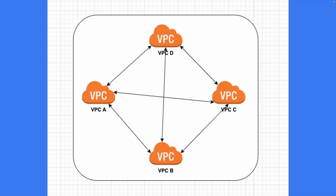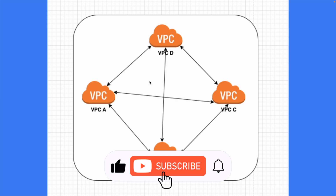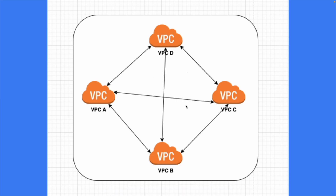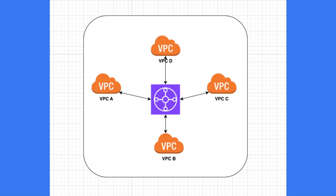Just for enabling the network connection between four VPCs, you can see how many VPC peering connections are needed — six connections in total. And if I add one more VPC, the number of connections will grow further. So there is definitely a management overhead in the case of VPC peering. Let's see how that looks with Transit Gateway.